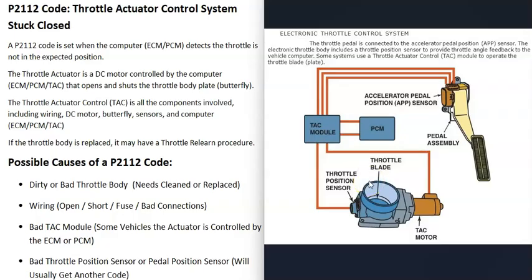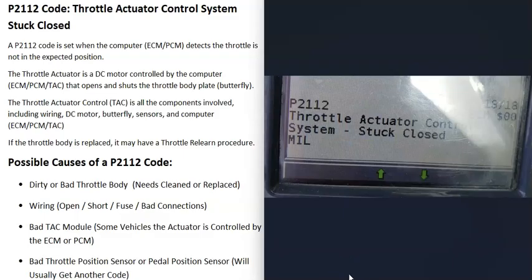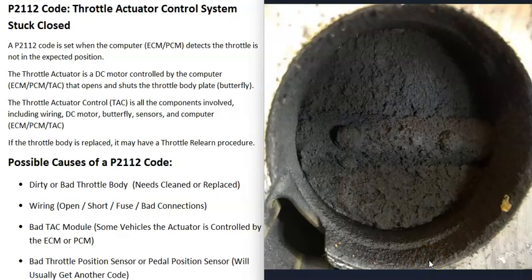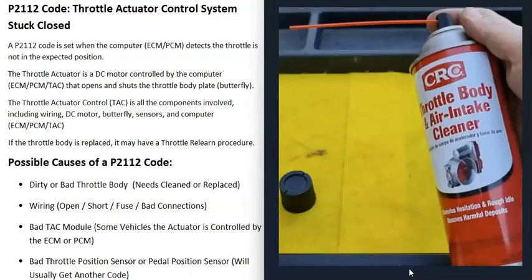When you get this P2112 code, the computer is seeing that the throttle plate is stuck closed for some reason, and it needs to be troubleshot. The first possible cause is some kind of issue with the throttle body itself — either the plate isn't opening and shutting correctly, the little motor has burned out, or it's gotten really dirty and can't open and close correctly. The first thing I would do is go check inside and see if it's gotten really dirty, because it is very common for throttle bodies to get a lot of buildup on them, which can cause them to get stuck or throw the sensors off.